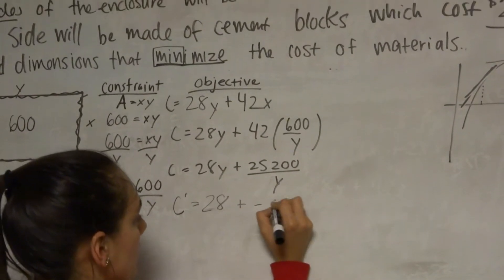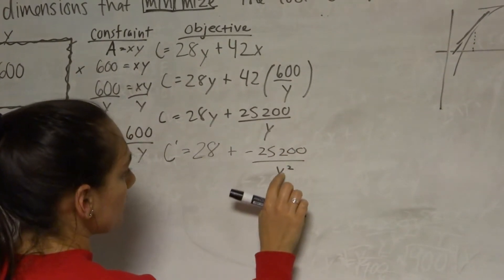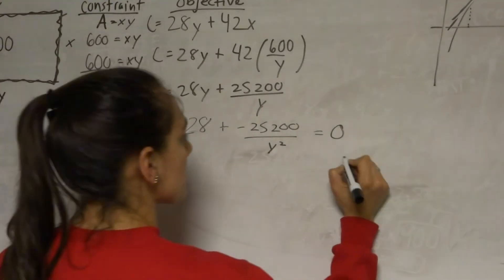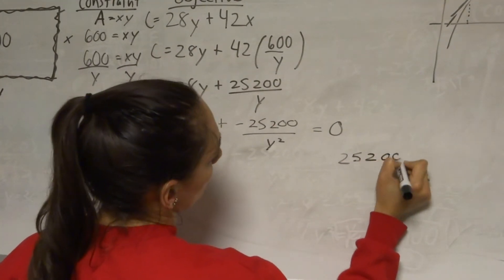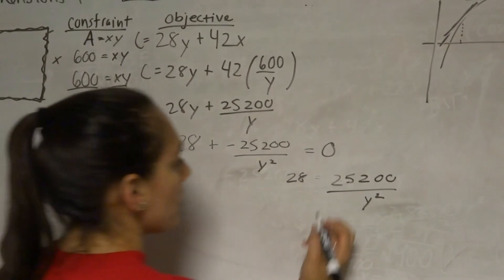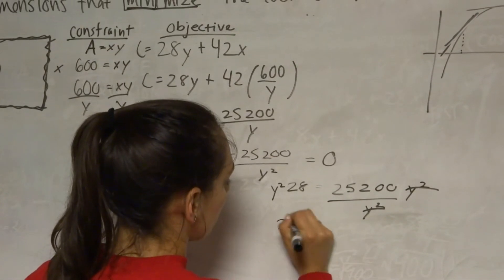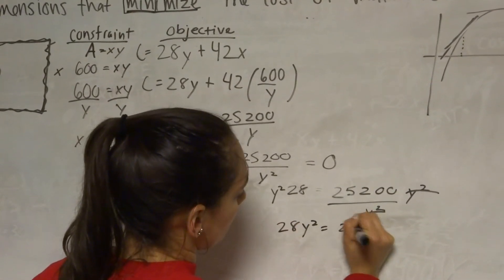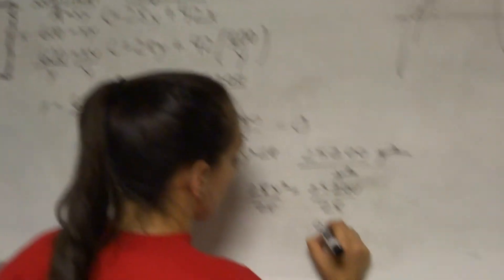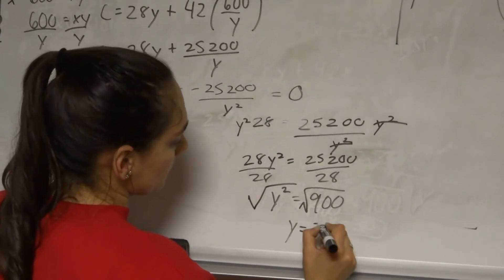And we get negative 25,200 over y squared. So now we're going to set this equal to zero. And I'm going to subtract this. So we're just solving for y now. So we just added that, then multiply by y squared to get it out of the bottom. So 28y squared equals 25,200 divided by 28, which is 900. Then we're going to take the square root. y equals 30.